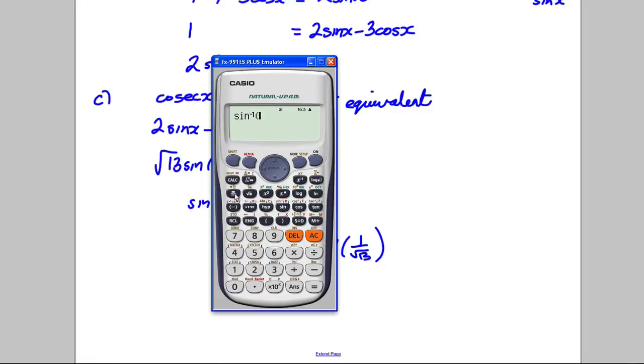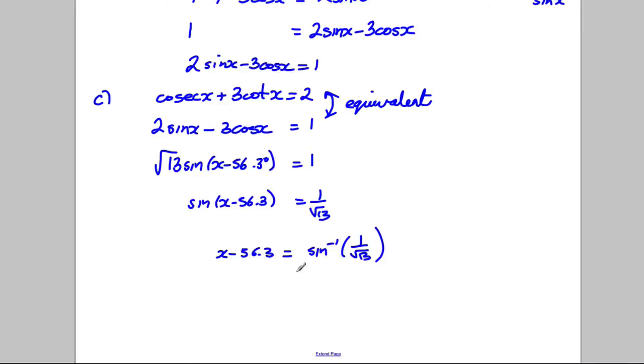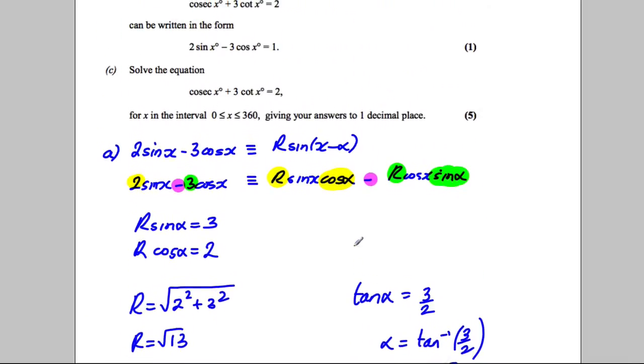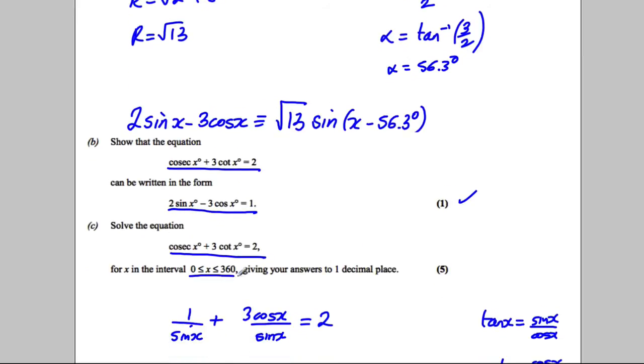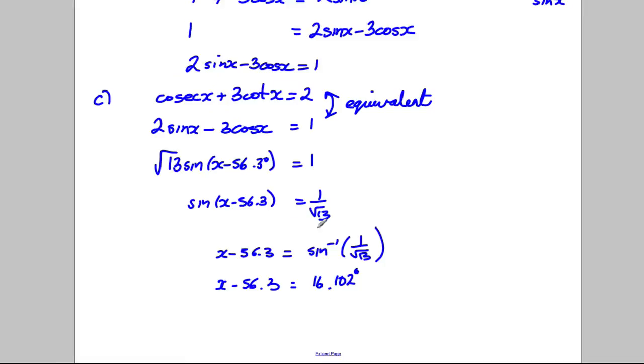Inverse sine of 1 divided by the square root of 13, close brackets. It's 16.1 degrees. So x minus 56.3 is 16.102 degrees. Now let's look what we want our answers for. We want our answers between 0 and 360 to 1 decimal place.